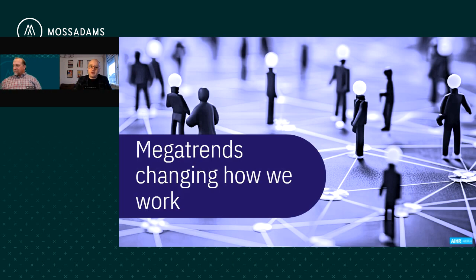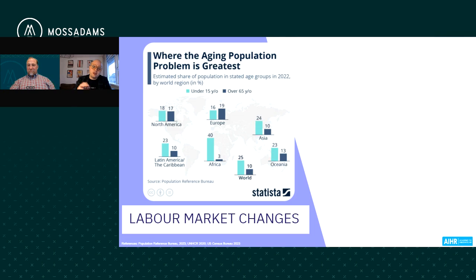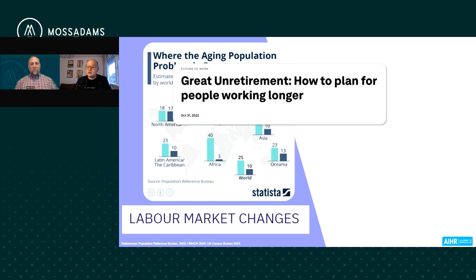Let's deep dive into the first mega trend. I'm going to highlight five key trends that are going to influence and change the way that we perceive and think about work. I'll kick start with labor market changes. There are two really interesting things to bear in mind. The first is that we are becoming older — due to various medical advances, people want to work longer. We're already starting to see a global trend of retirement ages starting to shift. But also a lot of people are saying they don't want to retire; they still have a lot to contribute, whether for financial reasons or because they want to enter a new career stage.